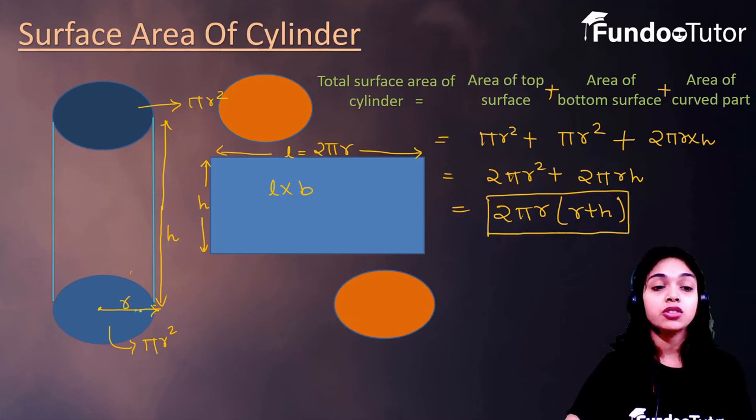If the height of cylinder and the radius of base is given, so by using this formula, we can easily find the surface area of cylinder.